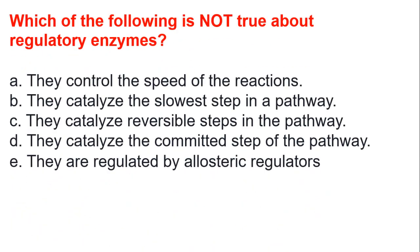Which of the following is not true about regulatory enzymes? A, they control the speed of the reaction. B, they catalyze the slowest step in a pathway. C, they catalyze reversible steps in the pathway. D, they catalyze the committed step of the pathway. E, they are regulated by allosteric regulators. The answer is C, they catalyze reversible steps in the reaction.